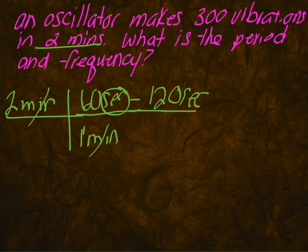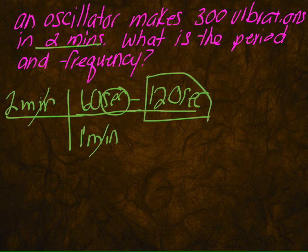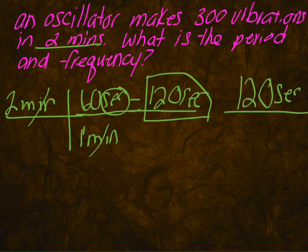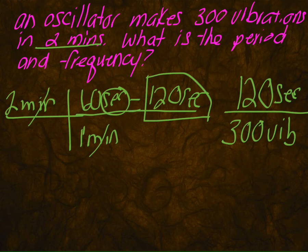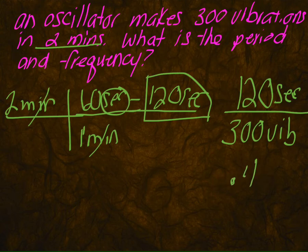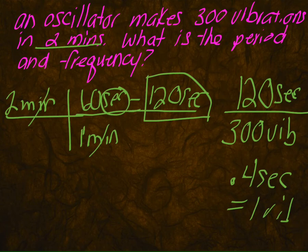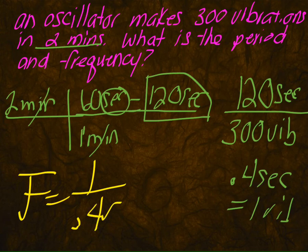So you've got 120 seconds, and every 120 seconds you get 300 vibrations. We want to figure out how long it takes for one vibration. Put 120 seconds on top and 300 vibrations on the bottom. When I did the math, that equals 0.04 seconds — so every 0.04 seconds, one vibration occurs, and that is your period. For frequency: F equals one over 0.04 seconds, giving you something in Hertz. You can leave it like that.